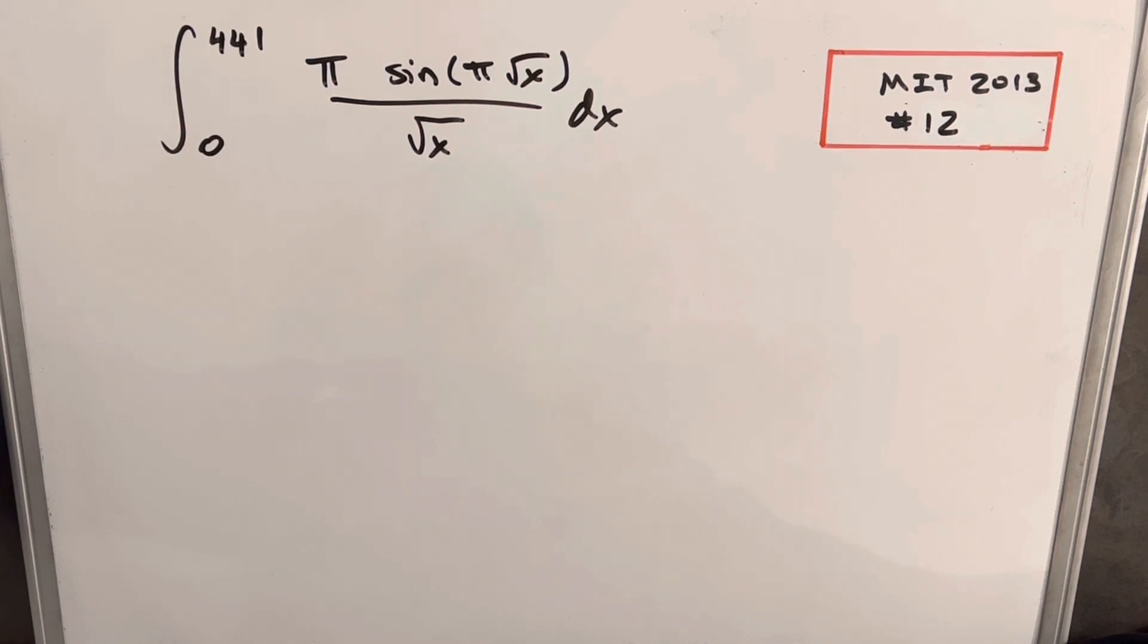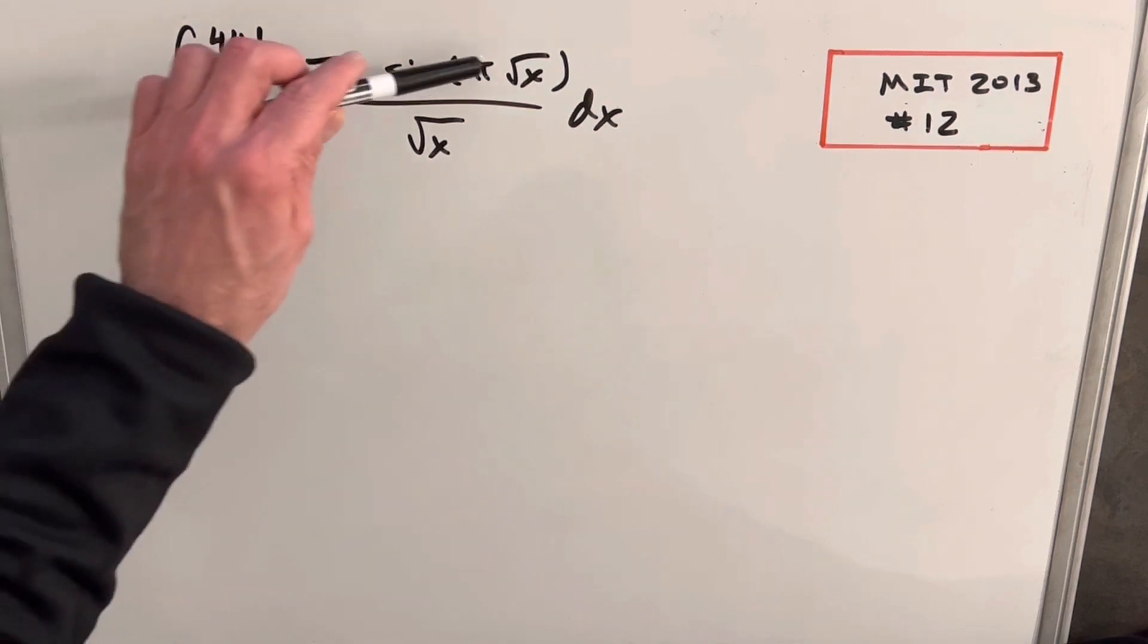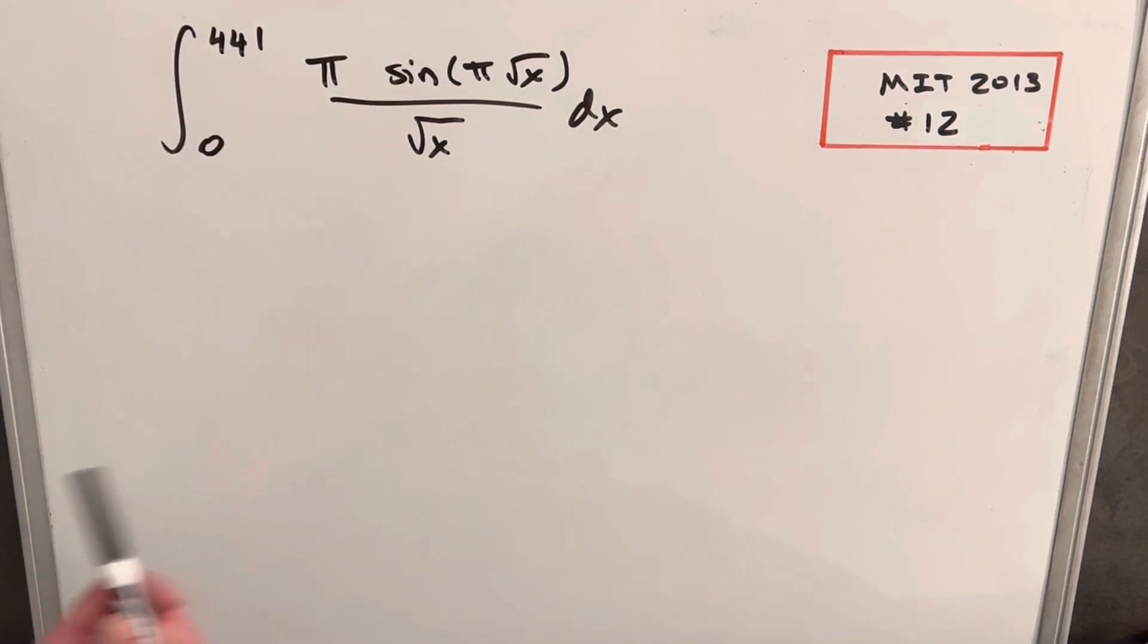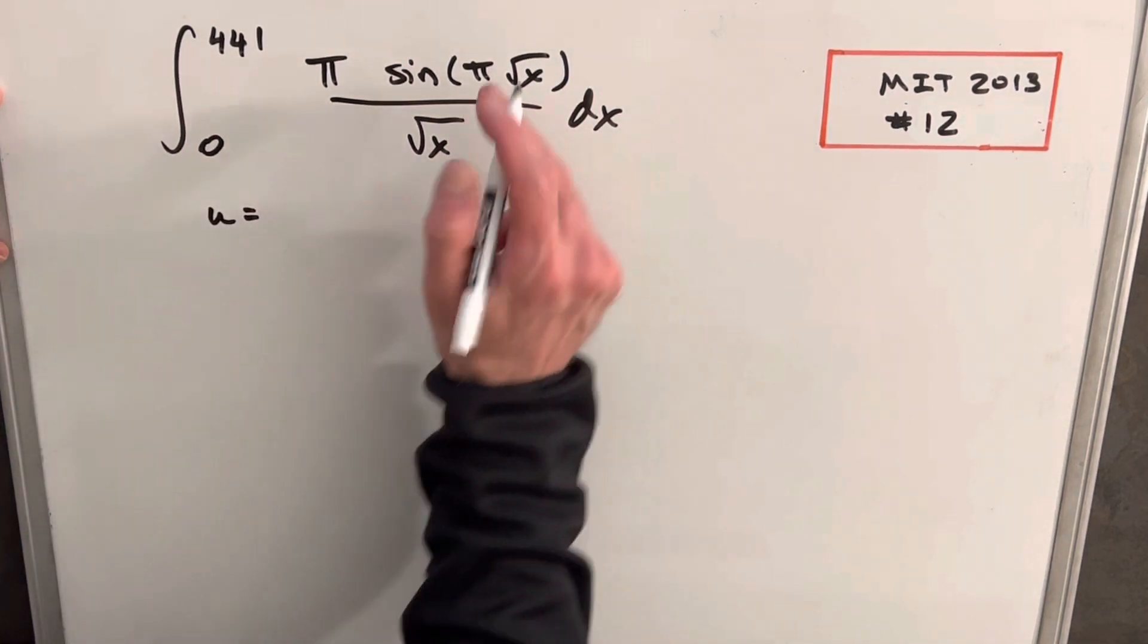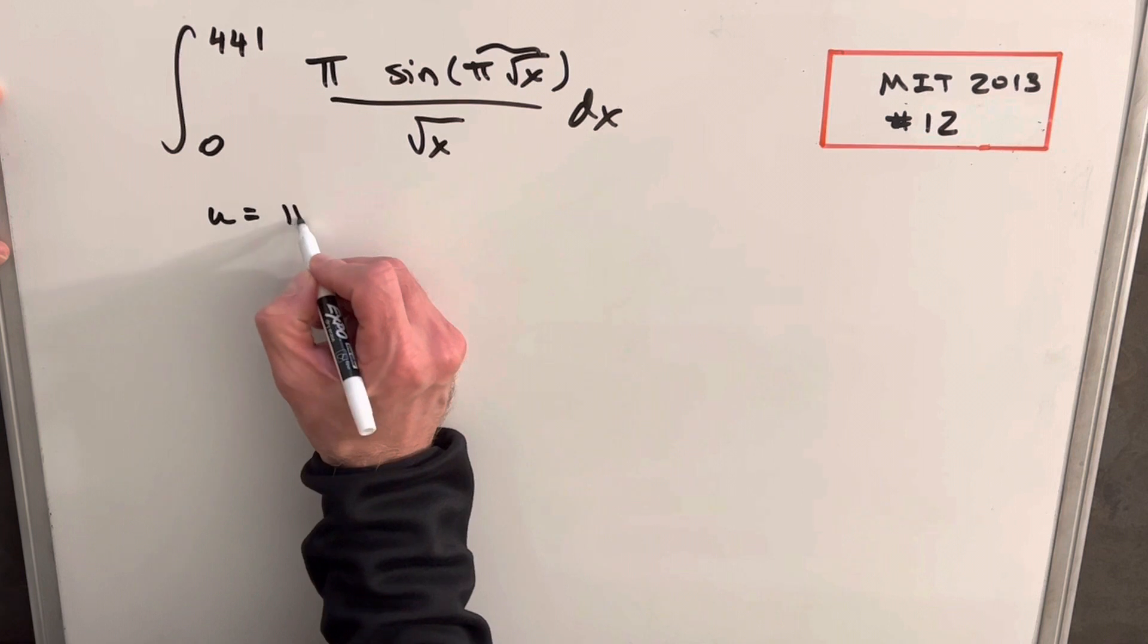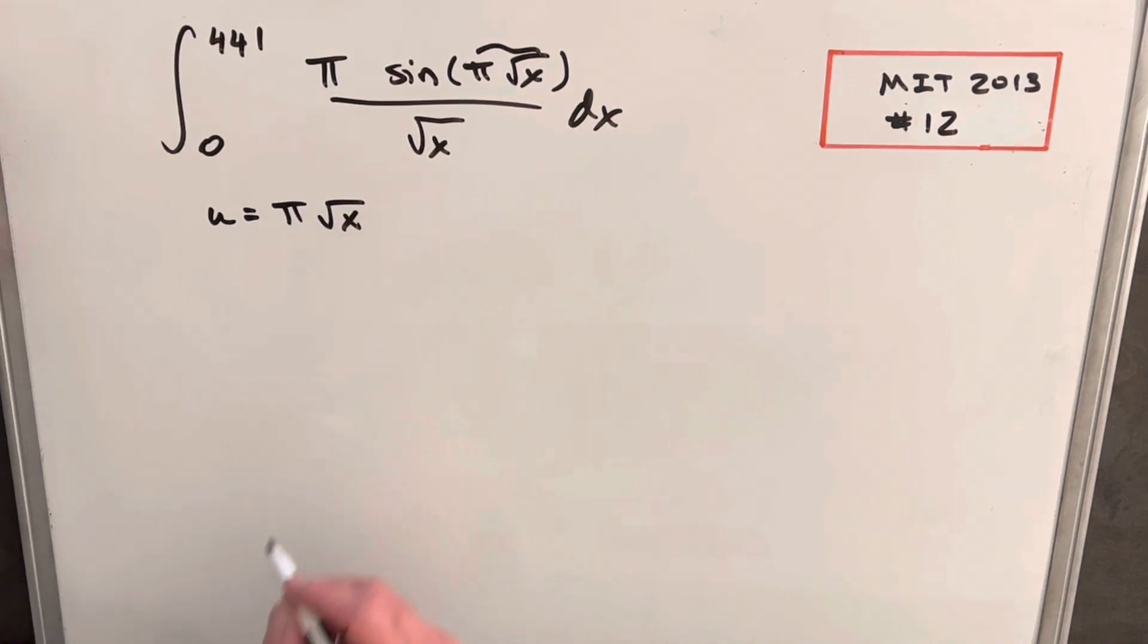All right, I think what we need to do first is really deal with this input to our sine function. We don't really know how to deal with it when we have a pi and a square root in there. What I want to do is make a u substitution. So we'll call u equal to pi square root of x.